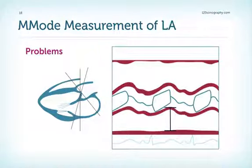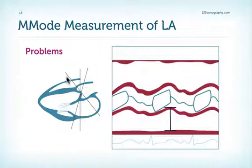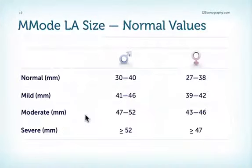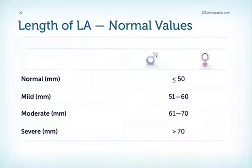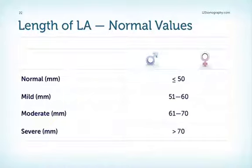However, there are a number of problems when using M-mode to measure the left atrium. One problem is that you very often don't get a perpendicular transection of the aorta and the left atrium at the same time, so you may get false diameters. Normal values for M-mode are 30–40 mm for males and 27–38 mm for females. This measurement is valuable in everyday clinical practice even though it does not reflect the shape and geometry of the left atrium or account for body surface area. A value of 50 mm is the cutoff between normal and abnormal; above 70–75 mm would be considered severely enlarged.